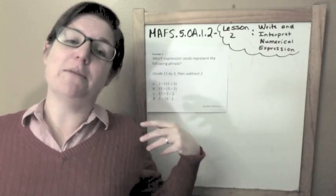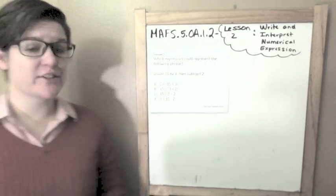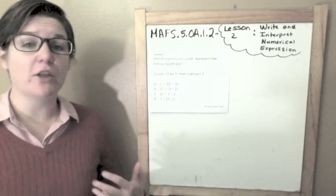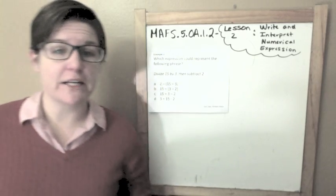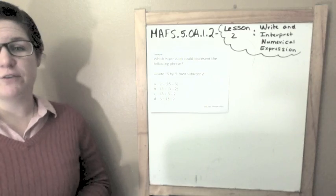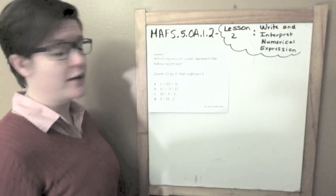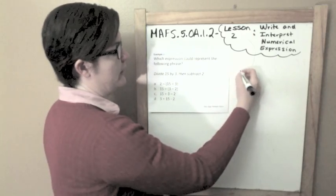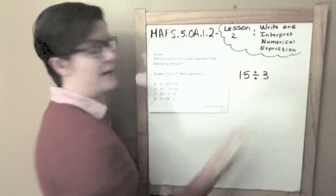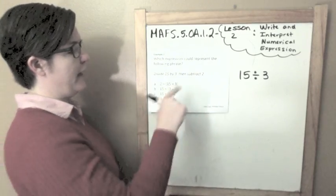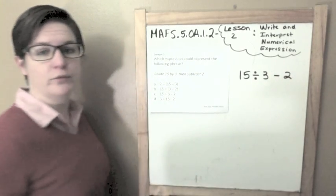Let me teach you example one. Which expression could represent the following phrase: divide 15 by 3 then subtract 2? The very first thing that I'm doing is dividing 15 by 3, so 15 divided by 3, and then I'm going to subtract 2.